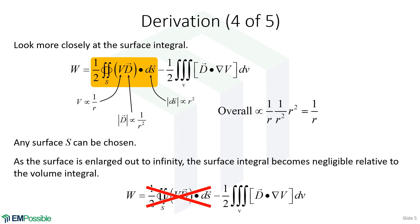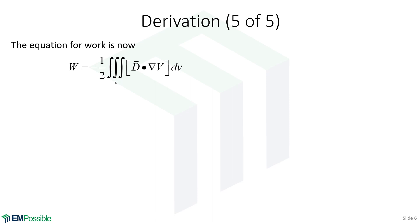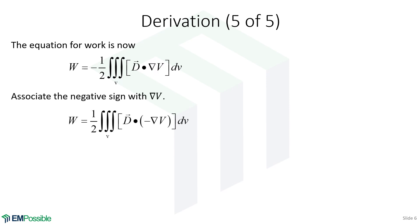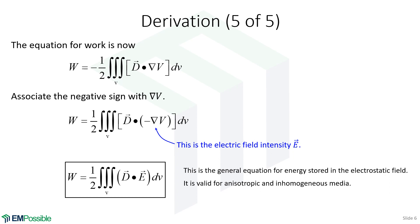We're working toward total energy just from the fields themselves, but we have the electric potential V here — we don't want that; we just want electric fields. Taking the negative sign inside and associating it with the gradient of the electric potential, we recognize that negative gradient of V is just the electric field intensity E. So we can replace that term with E, and this gives us our final equation: one-half times the dot product D·E integrated over the volume gives the total energy stored in the electric fields. This is a completely general equation.